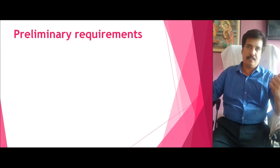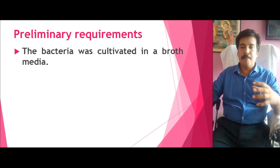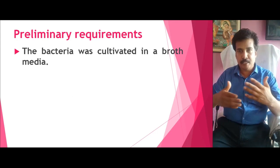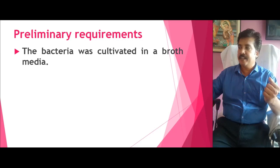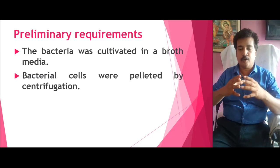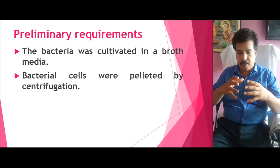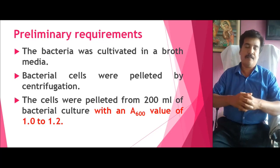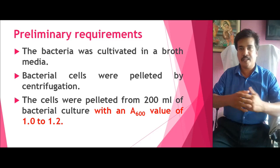The first step — the preliminary requirement before starting isolation — is that the bacteria should be cultivated in a media suitable for its growth. The bacteria can multiply in a tremendous manner, so a good harvest of bacteria gives a good yield of DNA. Once the bacterial cells have been grown to an enough quantity, they are centrifuged, the bacterial cells get sedimented and pelleted out. This pellet should be analyzed to determine whether it is suitable for the isolation procedure.